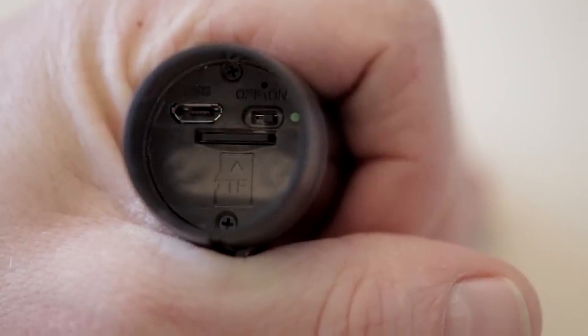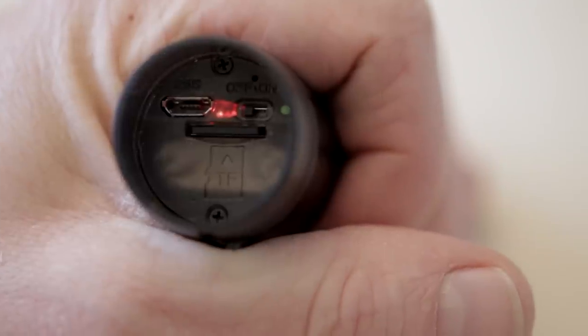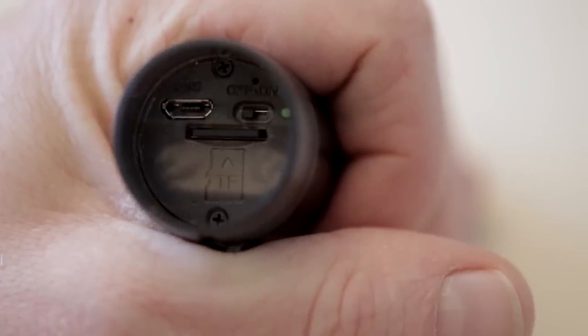When flashing slowly, like this, the camera is recording. To stop recording, move the switch to off and wait until you are sure the red light is out.